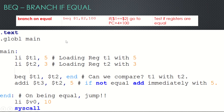Let's go to the code. It's very simple: dot text, dot global main. In main, I load t1 with 5 and t2 with 3. Then I use BEQ — branch if equal — on t1 and t2. If they are equal, I move to 'end.' In 'end,' I call the system call to exit the code properly. If they are not equal, I execute add-immediate t3, t2, 5, which means t2's content (3) is added with 5 and the result is stored in t3.